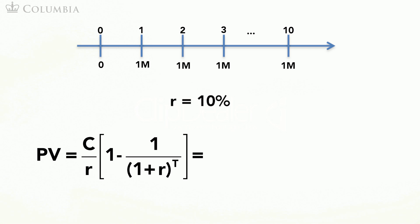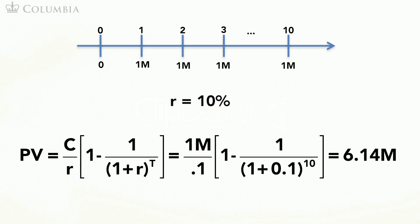We can apply the annuity formula to calculate exactly what the value is. In this case, the cash flow C is $1 million, the discount rate R is 10%, and the number of periods T is 10. Plugging these values into the formula leads to a value of $6.14 million.